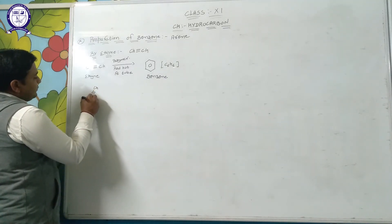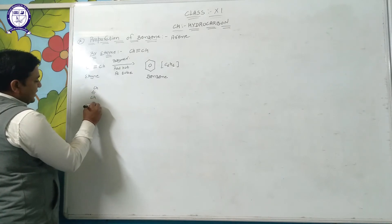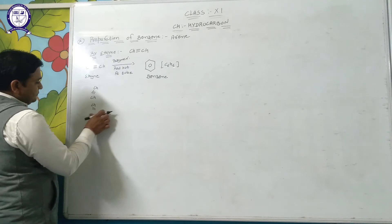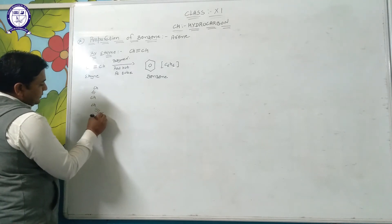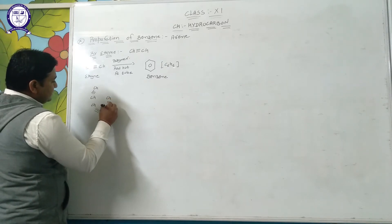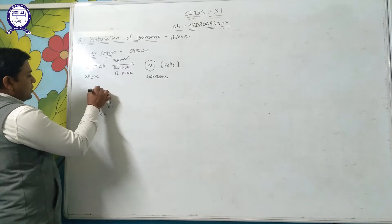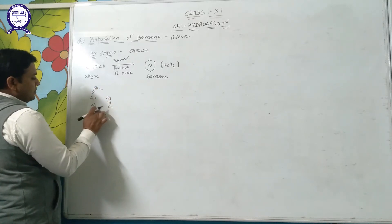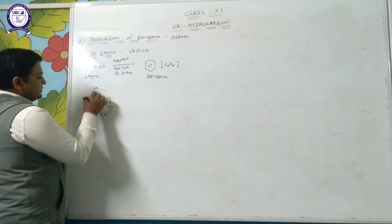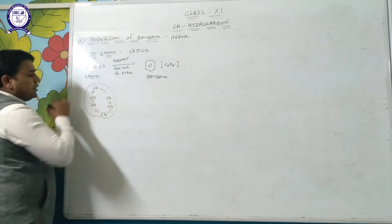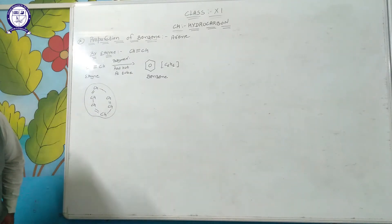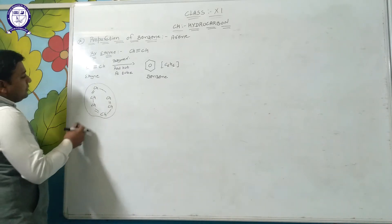In this reaction, 3 moles of ethyne are arranged in a cyclic pattern. Each C≡C bond contributes to form the ring, and this gives the formation of benzene.